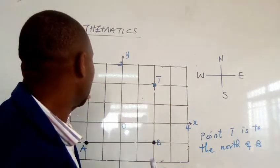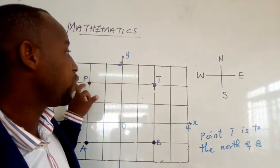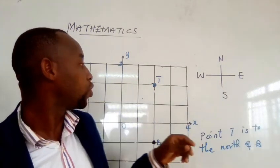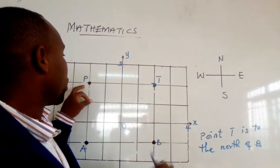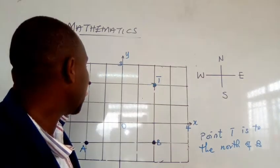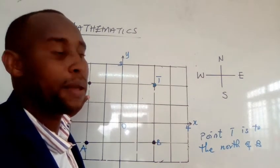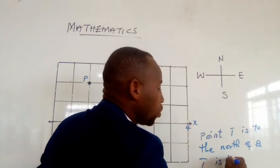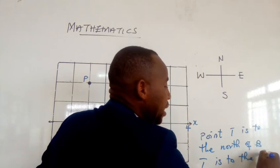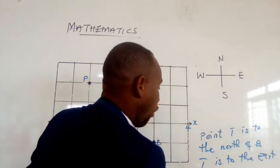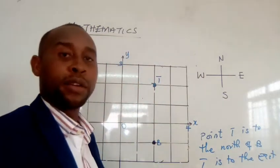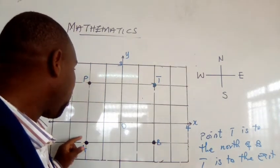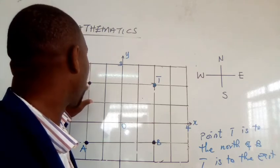Now we are going to describe the same point T standing at P. When you are standing at P, you see that T is to the east of P. So you say: point T is to the east of P.